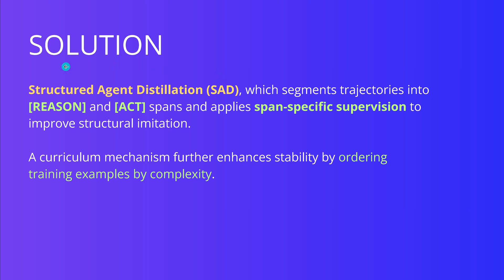Congratulations. So we have structured agent distillation, which is SAD, which segments trajectories into two spans. We have the reasoning span and the action span. We apply span-specific supervision to improve structural imitation learning. Because we know that in this learning process, if we have a curricular mechanism — starting with a very simple level of complexity and continuously increasing the complexity — our end performance will be much, much better. So this is what we integrate by ordering training examples by their complexity.